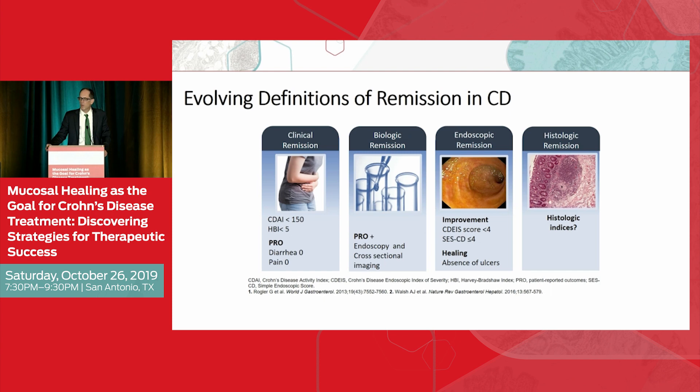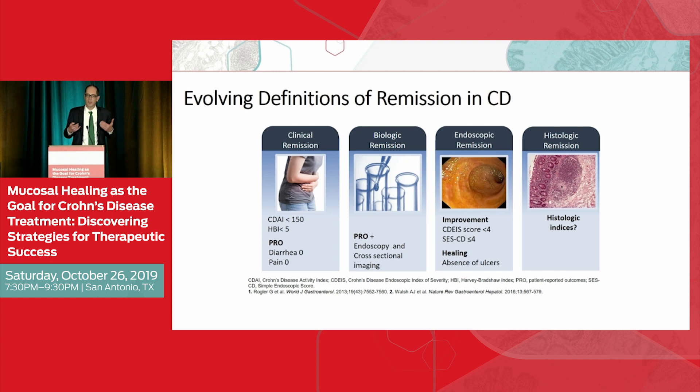We're evolving into endoscopic remission and endoscopic healing, and in Crohn's disease — as Russ already mentioned — sometimes we need cross-sectional imaging. The concept of endoscopic remission has been applied to ulcerative colitis, and now we're looking at this in Crohn's disease, including histology. The ultimate target for healing may actually be histologic improvement.